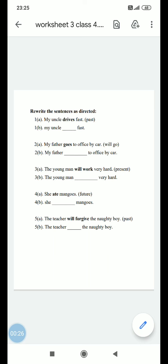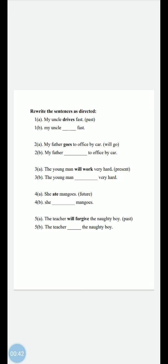My uncle drives fast - you have to convert the sentence into past tense. What is the past tense of drive? Drove. My uncle drove fast. My father goes to office by car - this sentence is in present form. You have to convert it to simple future tense: my father will go to office by car.